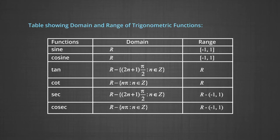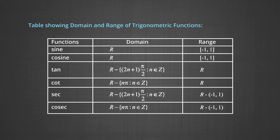A table is shown here for the domain and range of trigonometric functions. For the sin function, the domain is all real numbers and the range is the closed interval [-1, 1]. For the cosine function, the domain is all real numbers and the range is the closed interval [-1, 1]. For the tan function, the domain is all real numbers except the odd multiples of π/2, and the range is all real numbers. For the cot function, the domain is all real numbers except the integral multiples of π, and the range is all real numbers.